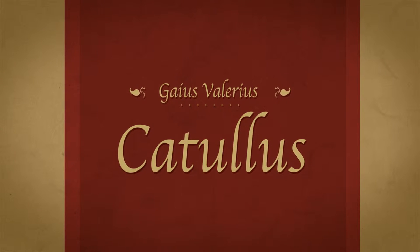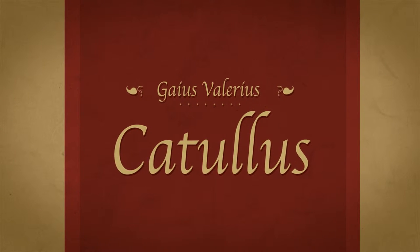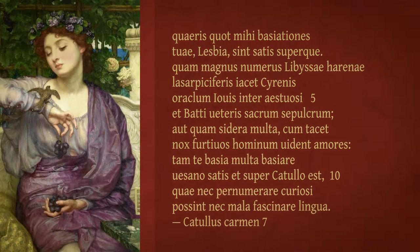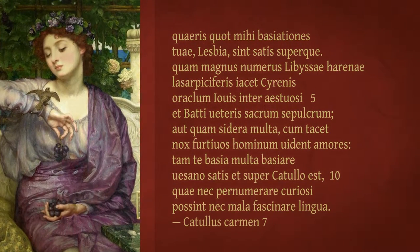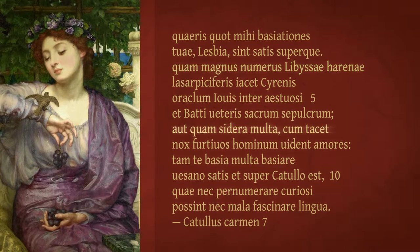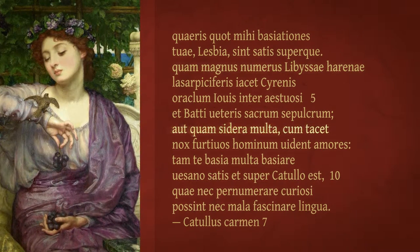The basic decision the editor has to make is whether he or she is going to produce a fat apparatus or a thin apparatus. To illustrate, consider a very short poem by the Latin poet Catullus, in which he imagines his girlfriend asking how many of her kisses is enough to satisfy him, and he compares her kisses to the number of sands on the Libyan desert or the number of stars in the nighttime sky.